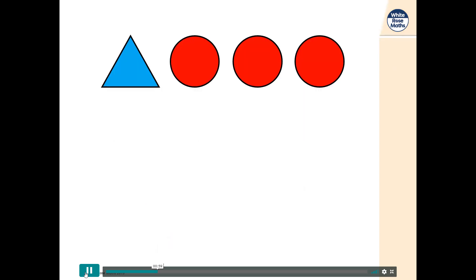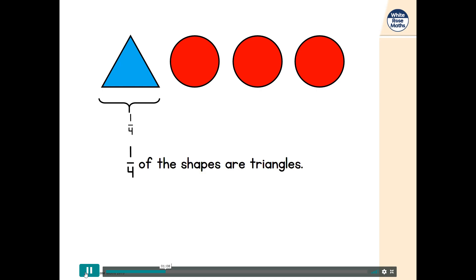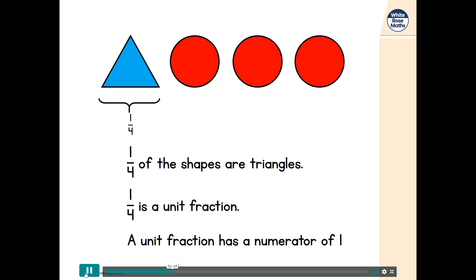Now let's look at the shapes again. Remember, one quarter of the shapes are triangles. We call one quarter a unit fraction. That's because one quarter has a numerator of one. A unit fraction is any fraction that has a numerator of one.